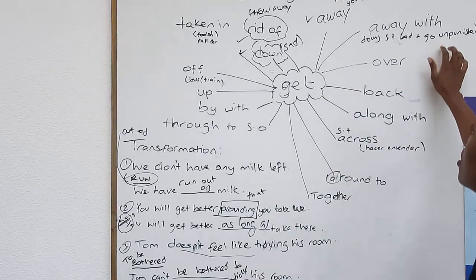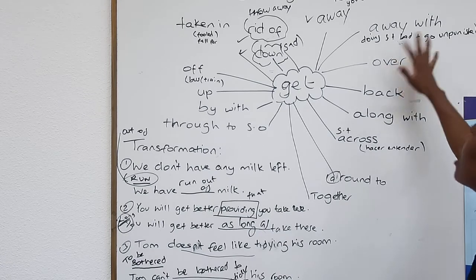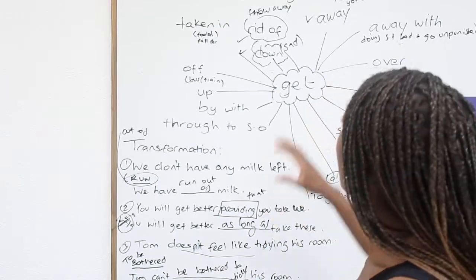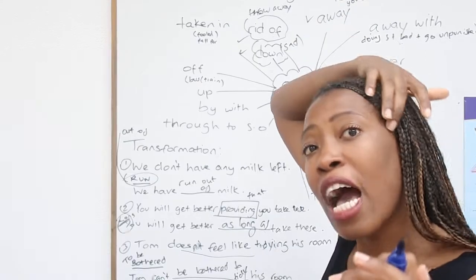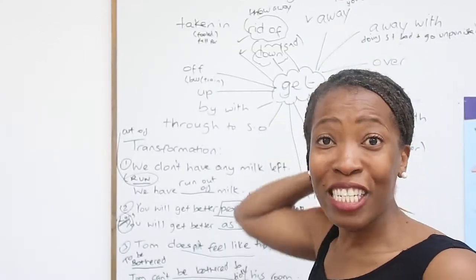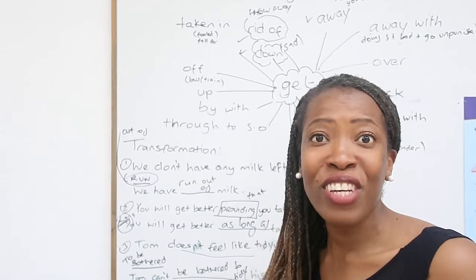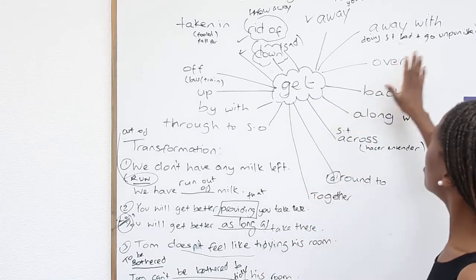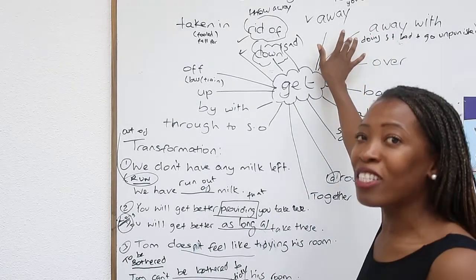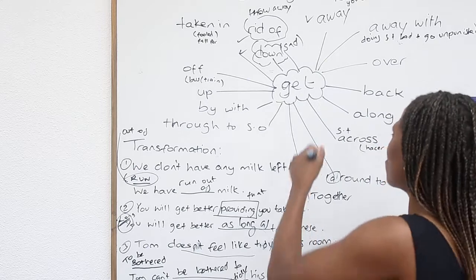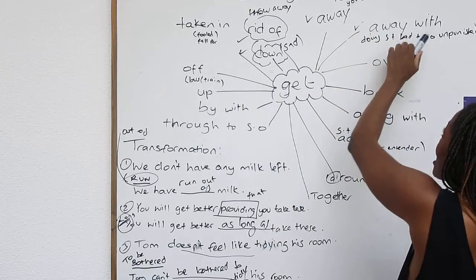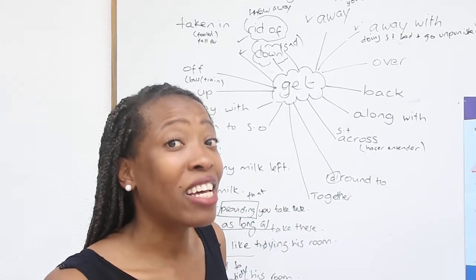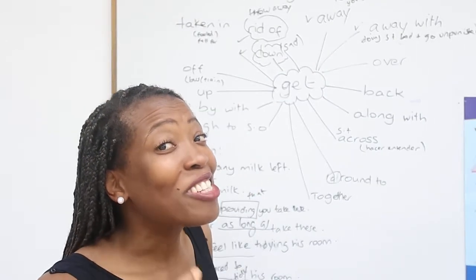So doing something bad and getting away with it, you go unpunished. The thief got away with or without paying for what he did. He got away from the police is another way of saying it's like you escape. To get away with is when you don't get punished for something. And to get away is what you would do if the police is chasing you and you managed to get away means they didn't catch you. You managed to escape.